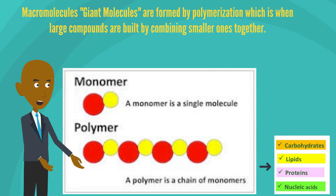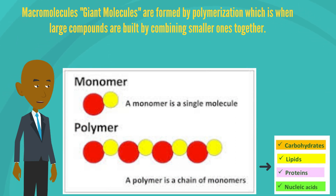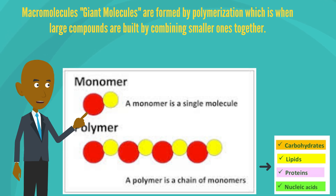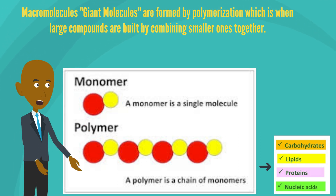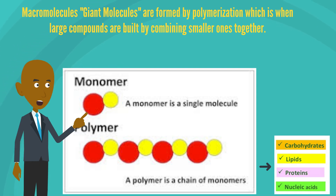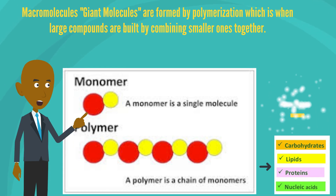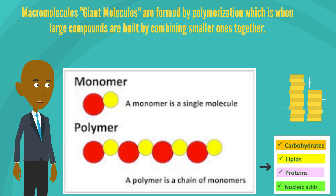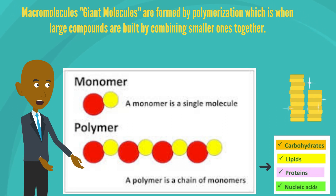Macromolecules are literally giant molecules, and they're formed by the process of polymerization, which is when large compounds are built by combining smaller ones together. The very basic building blocks of a macromolecule are called monomers, which are single molecules. If we combine many of these monomers together, they form a polymer, which is a chain of monomers. These polymers form our four macromolecules: carbohydrates, lipids, proteins, and nucleic acids.